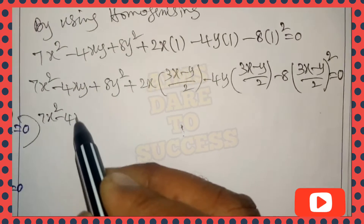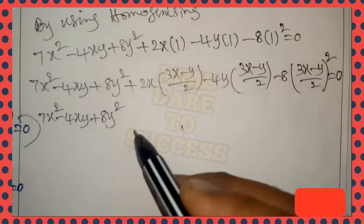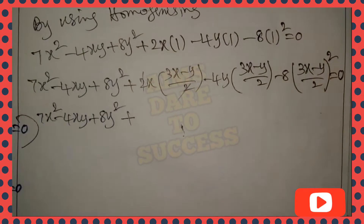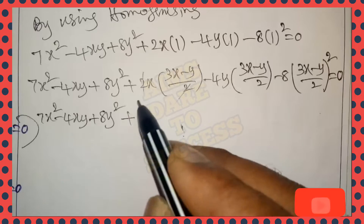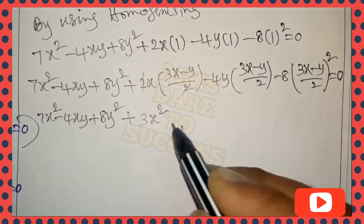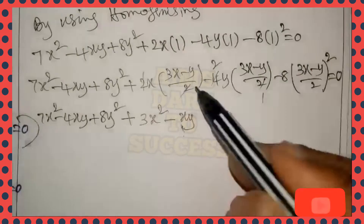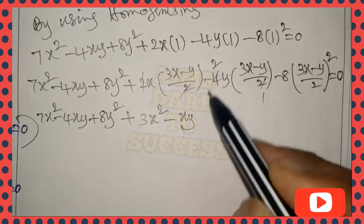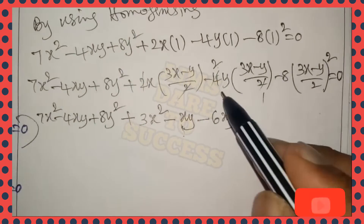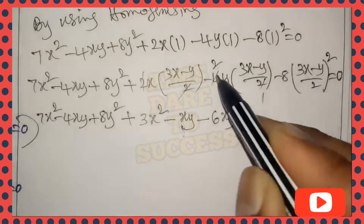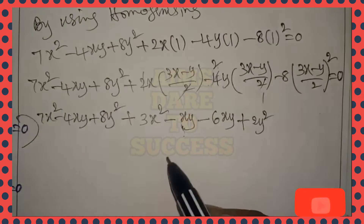Expanding the first-degree terms: 7x²-4xy+8y². The 2 and 2 cancel, giving x·(3x-y): 3x²-xy. Then -2y·(3x-y) with the 2s cancelling gives: -6xy + 2y². So far: 7x²-4xy+8y² + 3x²-xy - 6xy + 2y²...